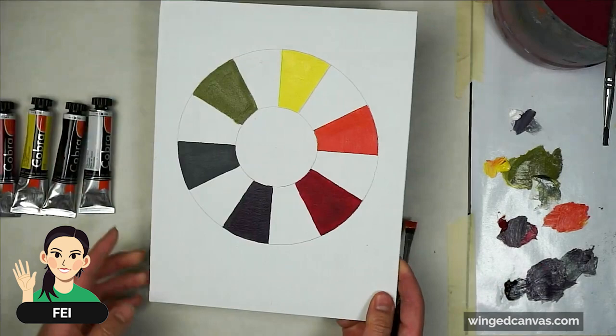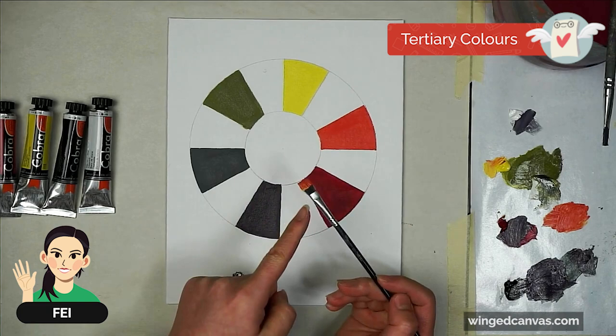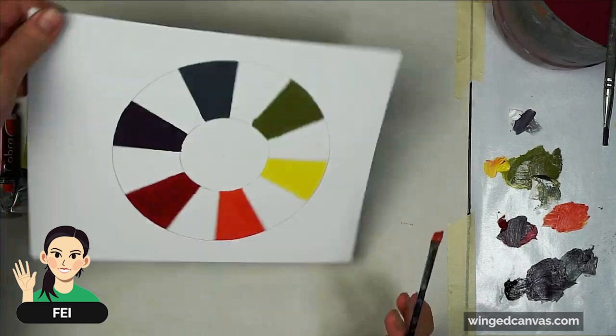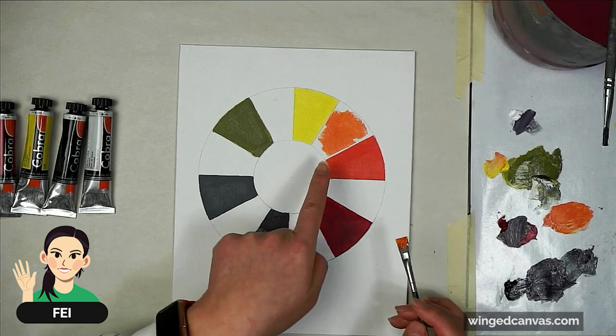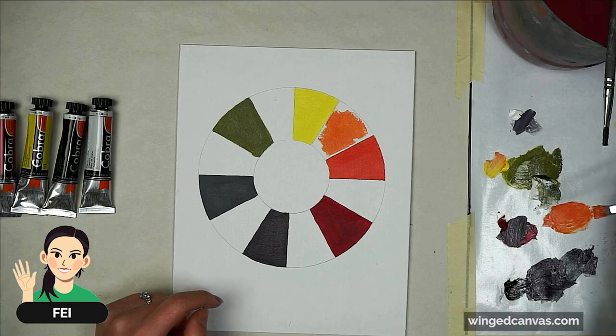You can always turn your color wheel because it's very hard to get perfect edges with just one orientation. I always turn my pieces so that I get the nicest edges. Once I have my orange in, I can start to paint in my tertiaries. Since I already have the orange, I'm going to do my yellow orange. To do that, I'm going to take the cleanest yellow that I have and start to add to my current orange and lighten it.